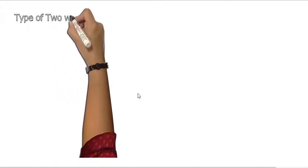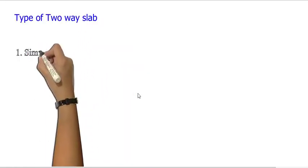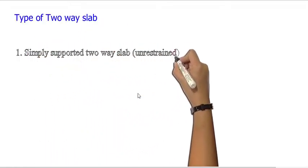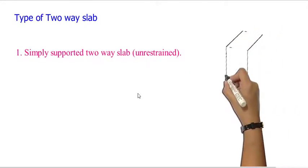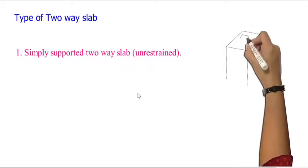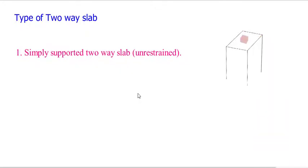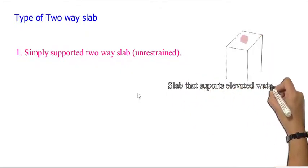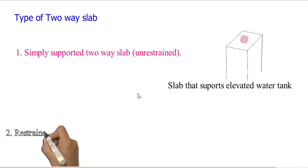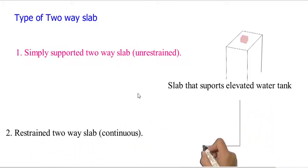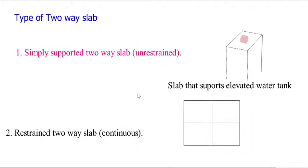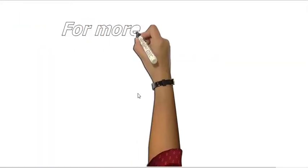Types of two-way slabs: the first one is a simply supported slab, or unrestrained. A good example of this type is a slab that supports an elevated water tank. The second one is a restrained slab, or continuous. A good example of this type is slabs in a multi-storied reinforced concrete building.